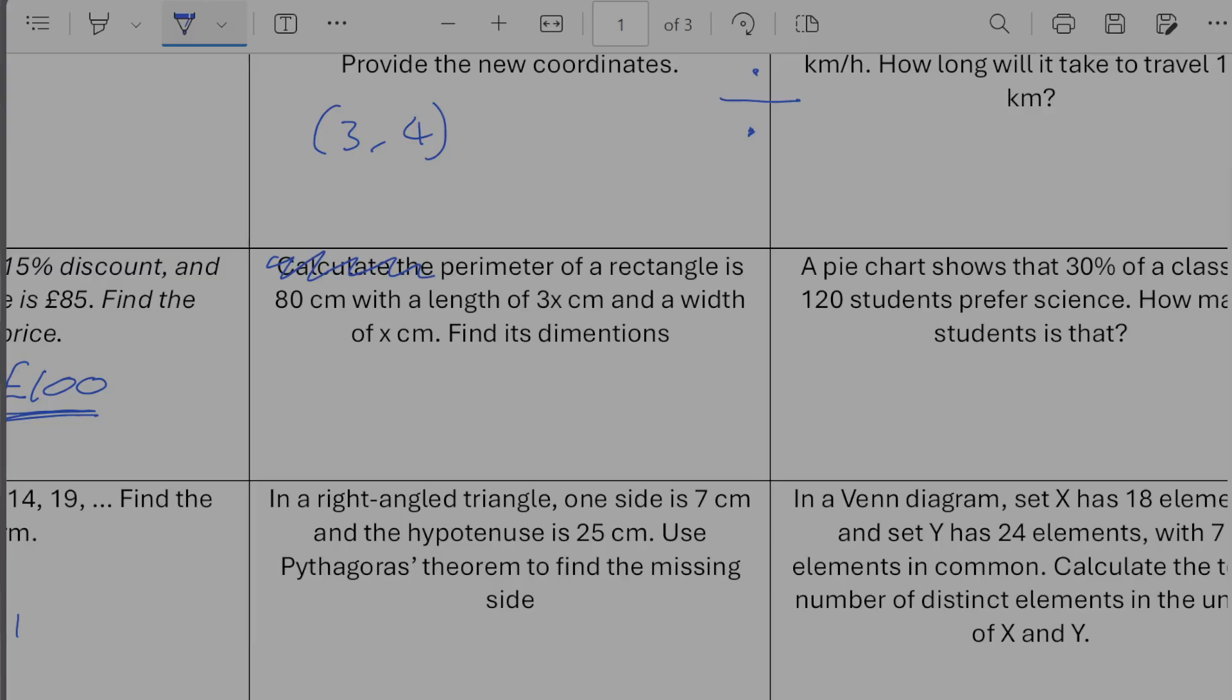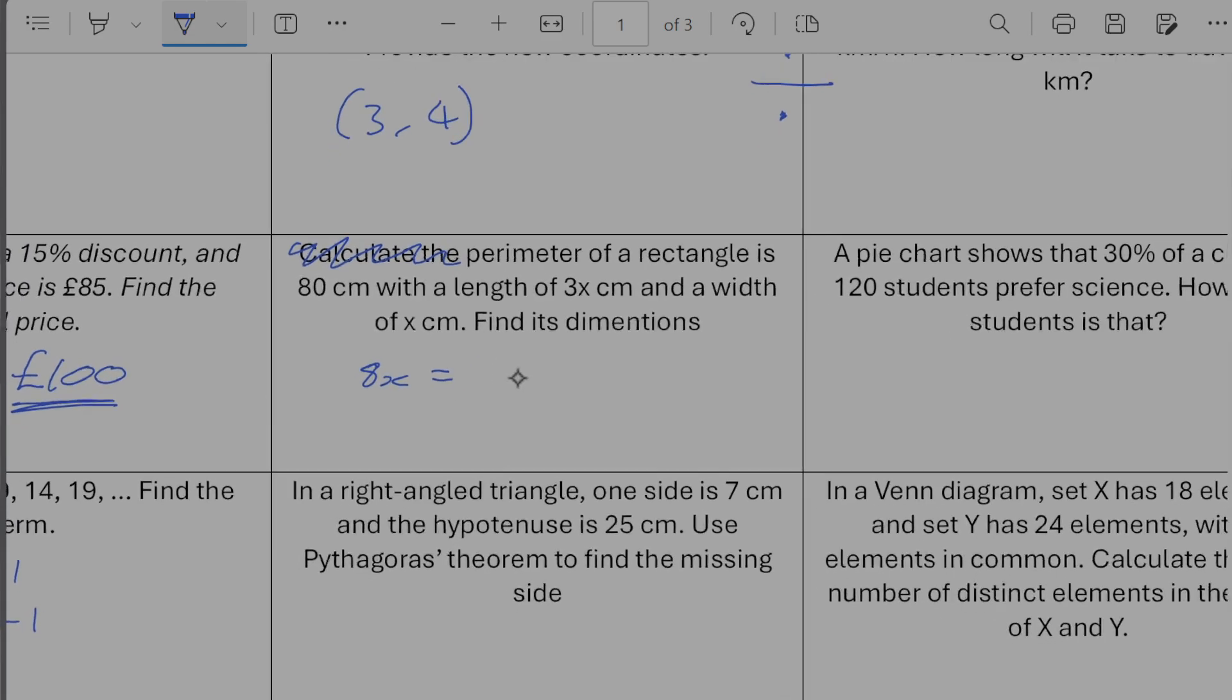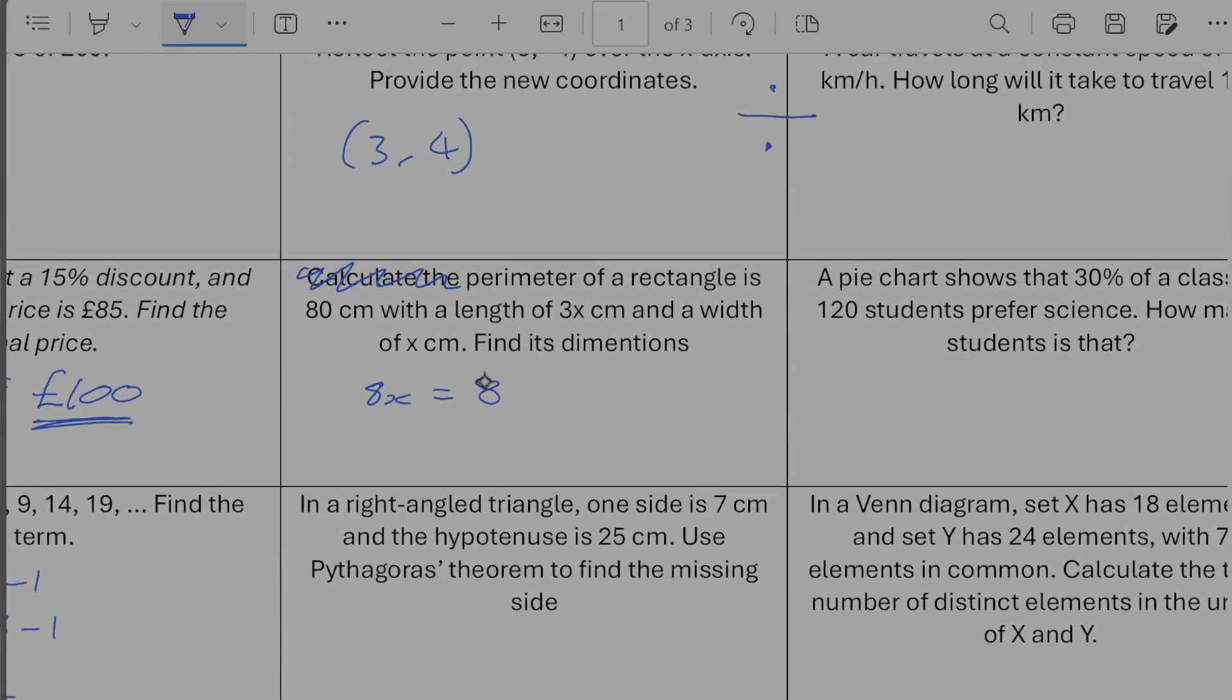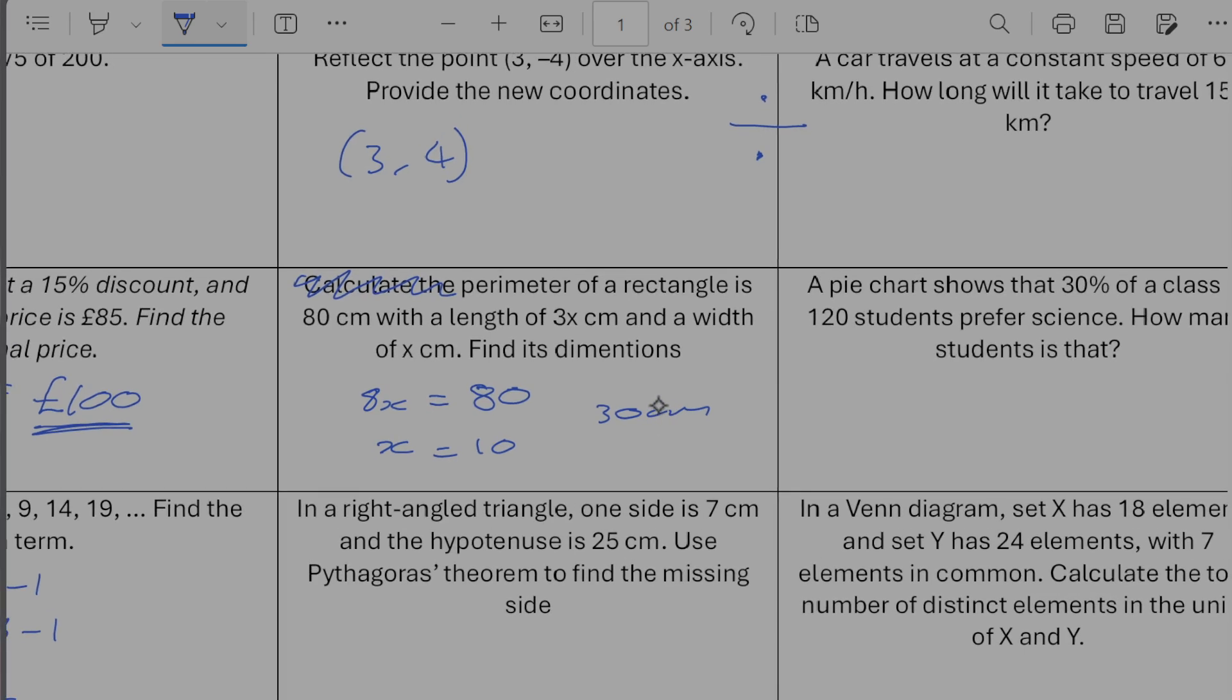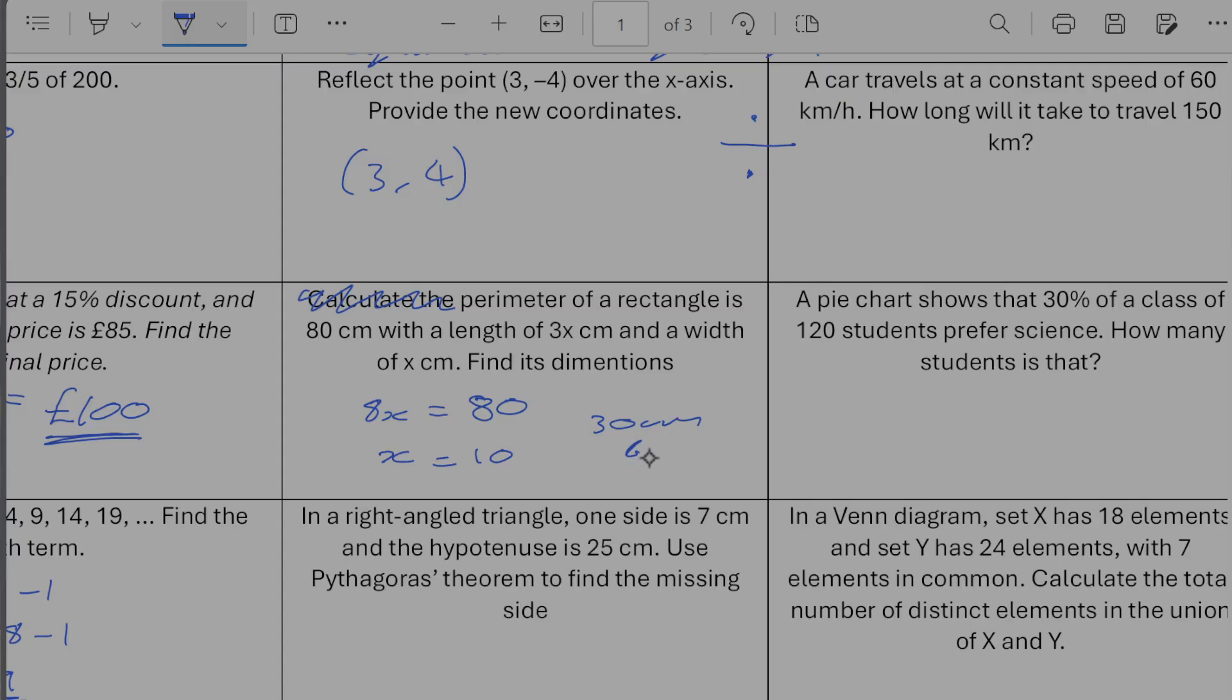Calculate the perimeter of a rectangle. The perimeter of a rectangle is 80 centimeters with a length of 3x and a width of x. Find the dimension. So if we imagine all the way around the outside that would be 3x plus x plus 3x plus x. So that would give us a total of 8x is going to be equal to 80. So x is going to be equal to 10 meaning that my dimensions are going to be 30 centimeters by 10 centimeters.